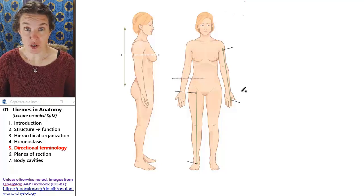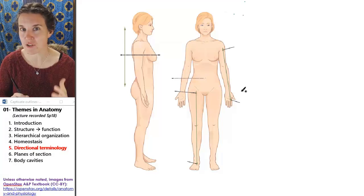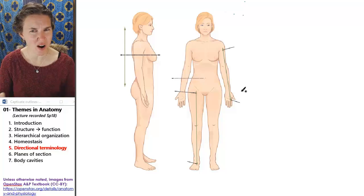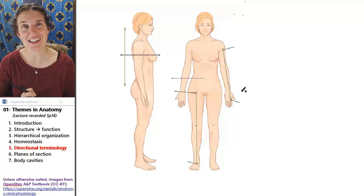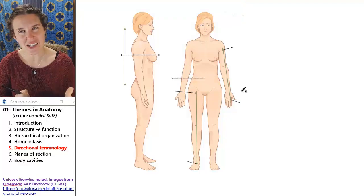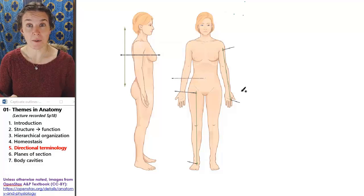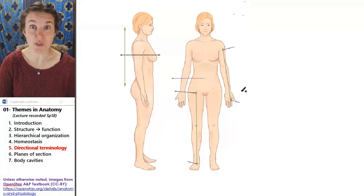When we're talking about structures and bodies, we have to have some very specific terms to describe where we are. The terms are relative. Unless we have a standardized set of words we can use to describe structures to each other, it's super confusing. So the directional terms that we're going to learn today are ones that we use every day.